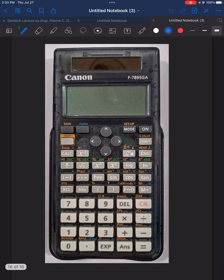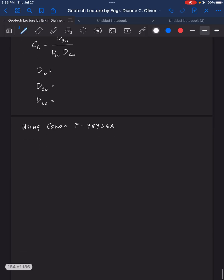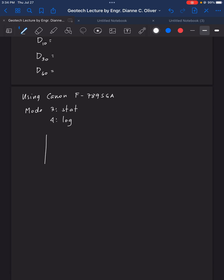It will show you the choices there. And then, choose their 4 for the logarithmic scale graph. And then, you will see their column, two columns. What are these two columns? This column here, the X1, represents the diameter. And the Y, represents the percent passing.